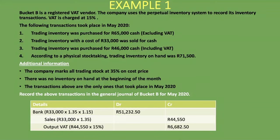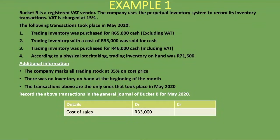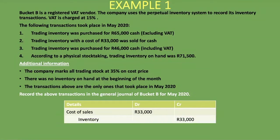The second journal entry for selling inventory is to record the cost of sales and remove the inventory from our books. Cost of sales is debited for 33,000 rand — cost of sales is an expense and expenses increase on the debit side. Trading inventory is credited for 33,000 rand, because inventory is an asset and decreases on the credit side. That completes the second transaction.